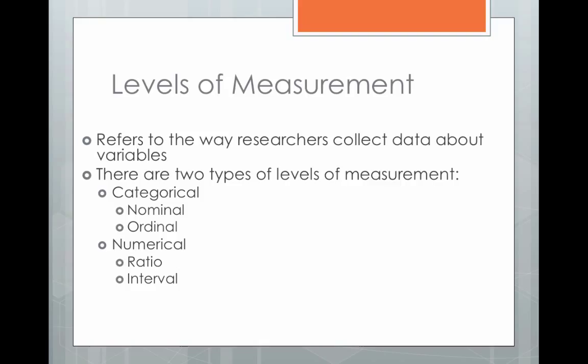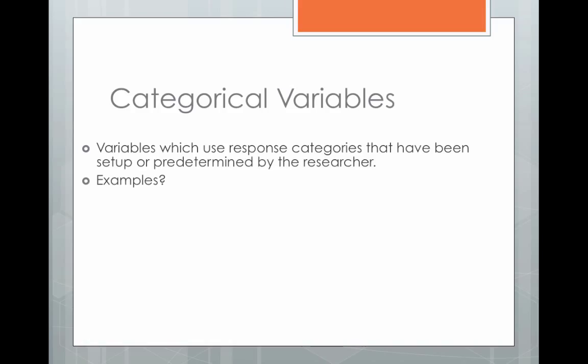There are two types of levels of measurement: categorical and numerical. Categorical variables are variables that have answer categories, whereas numerical level variables are variables that have numbers as the response categories. Let's talk about these individually, starting with categorical variables.